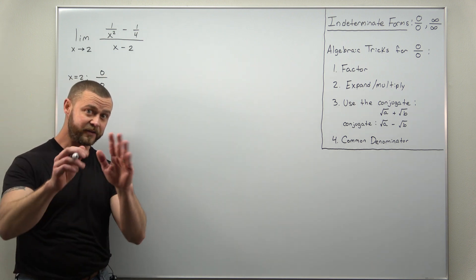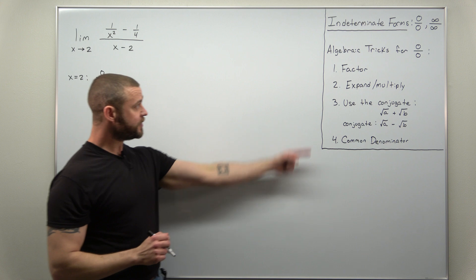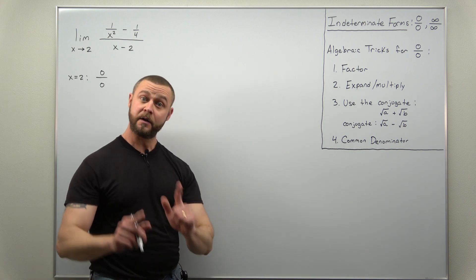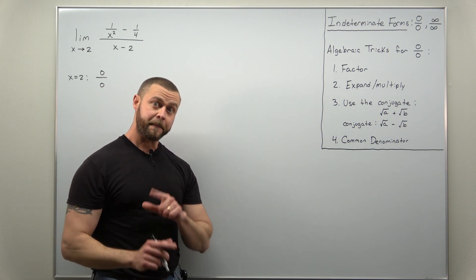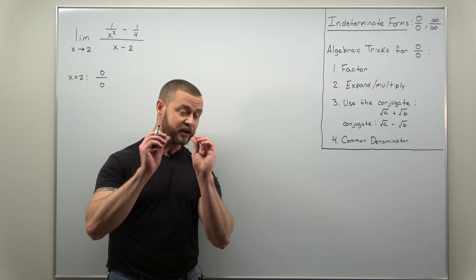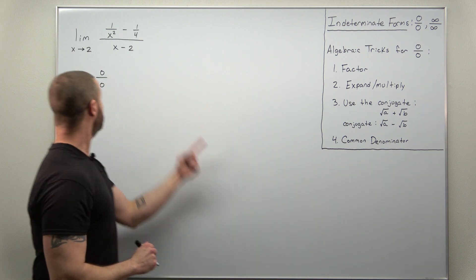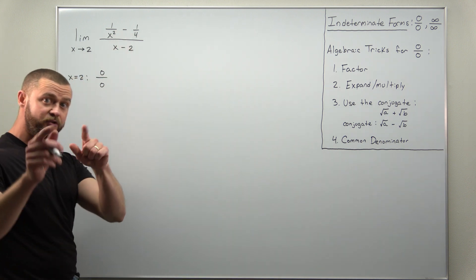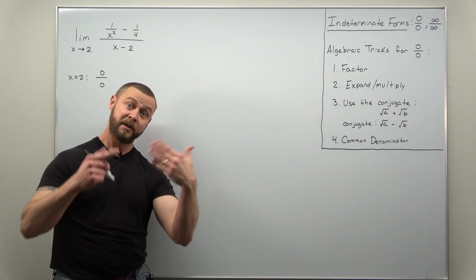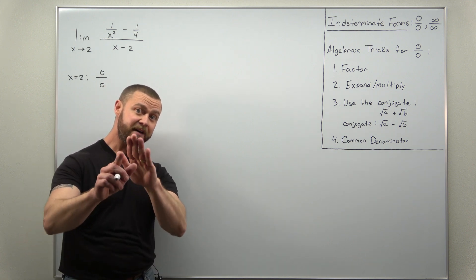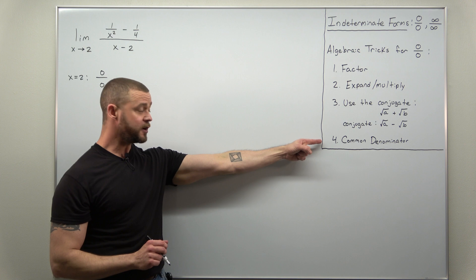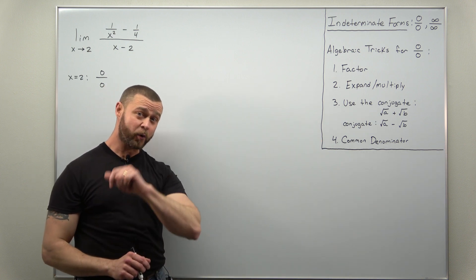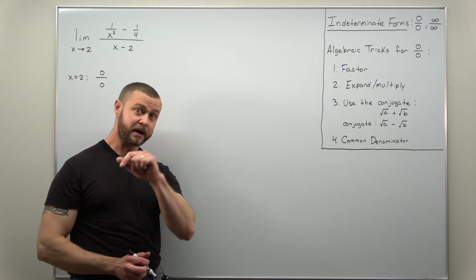All right, so we have an indeterminate form, but now we think of which algebraic trick we want to apply. Now I'm going to think that there is one that is obvious. We have two fractions in the numerator that we're subtracting. We subtract fractions when they have a common denominator. So here let's go ahead and go through the fourth trick of using a common denominator.